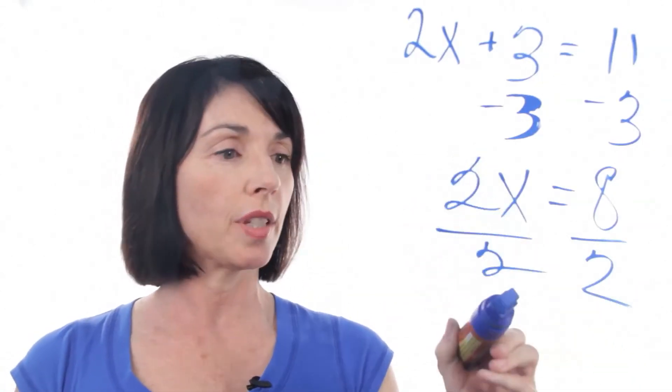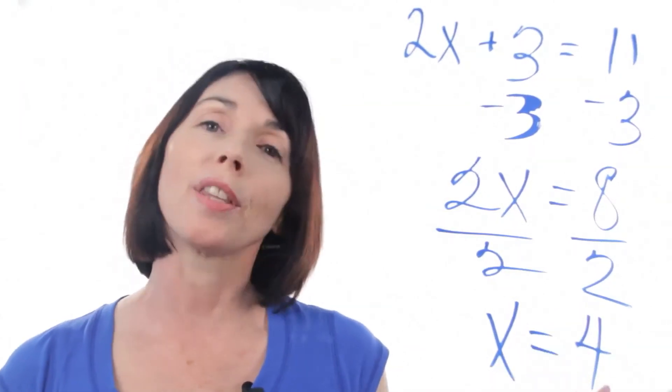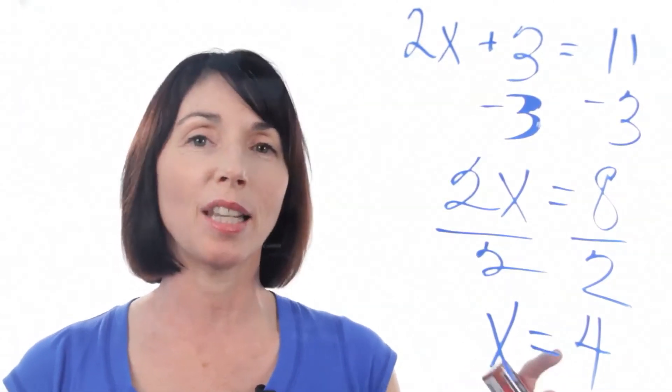2x over 2 just leaves us with an x, and 8 over 2 gives us 4. So the answer to our problem is x equals 4.